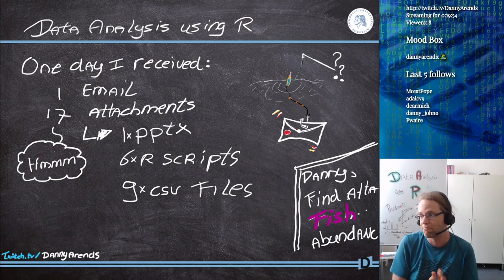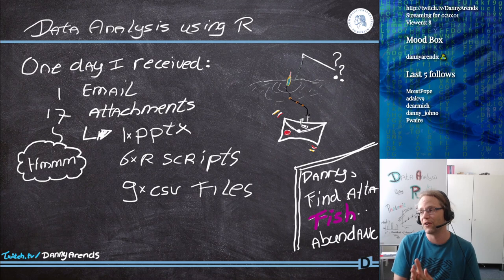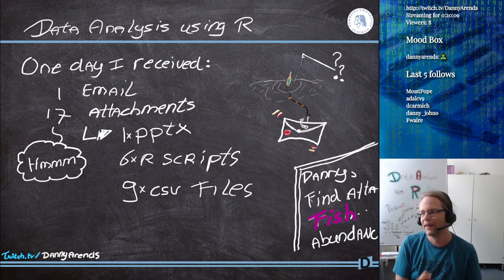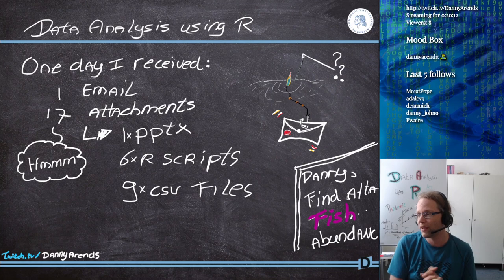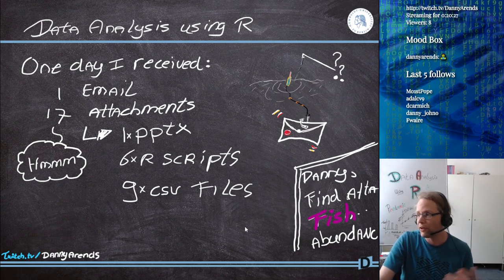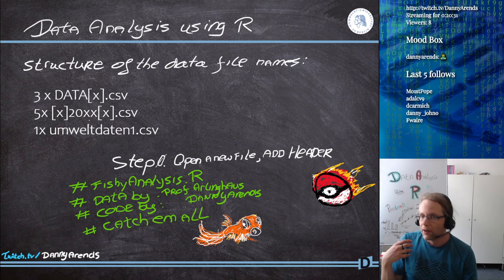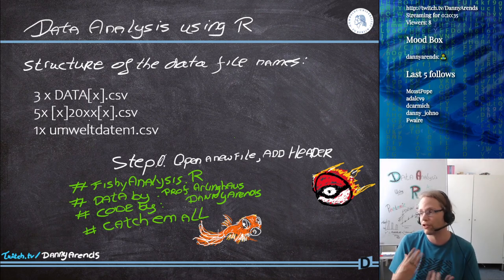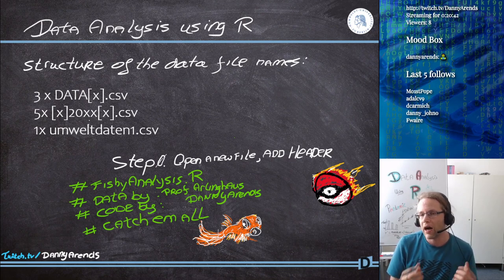The six R scripts were okay, though I have some comments on the coding style. Attached to this email was also nine different CSV files. The first thing I did was click 'download all', extract it, and put it in a folder. If I receive an email with data, I put the data file somewhere and start looking at the structure, because first I need to understand what I got.